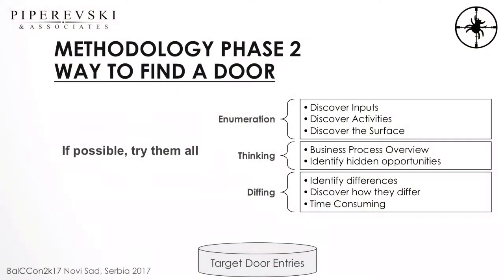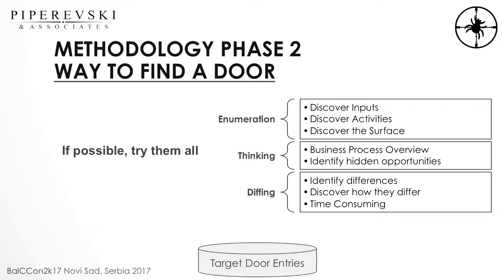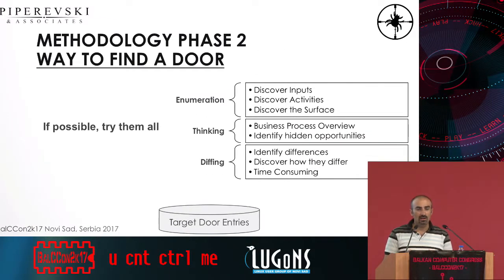After identifying the approach, we go to the next method: way to find a door. I recommend trying all options listed here. The first is enumeration — discovering all the inputs. Who has done web application enumeration here? A lot of you. Discovering inputs on a web application is easy. But what about inputs inside a binary desktop application? Or inputs inside a running operating system on a car? Always think outside the box to identify more and more inputs.